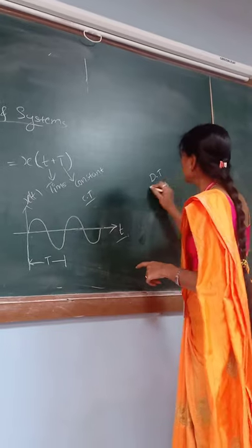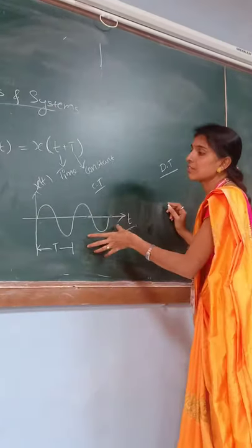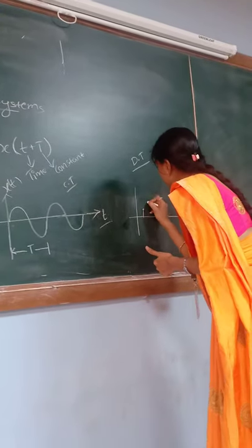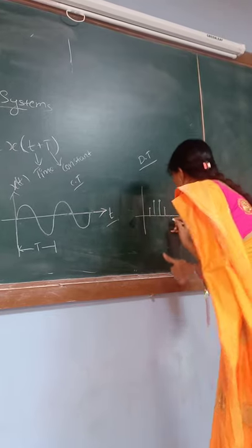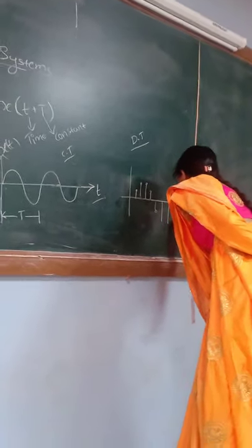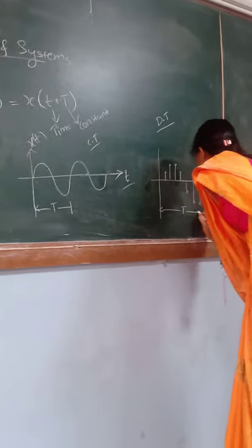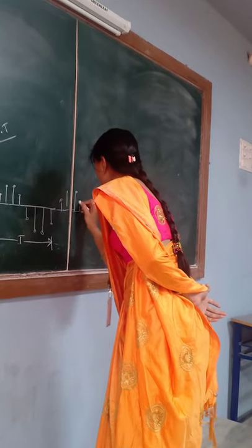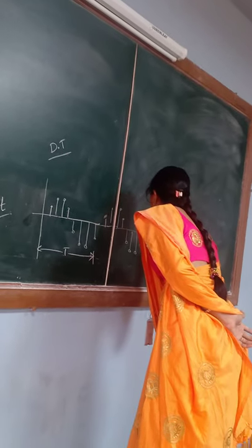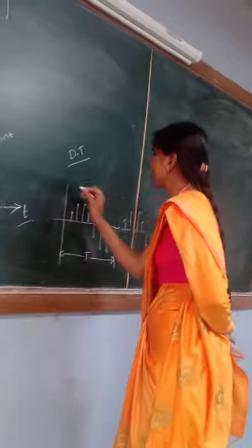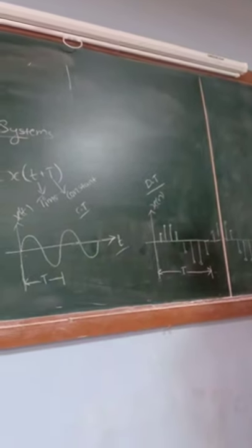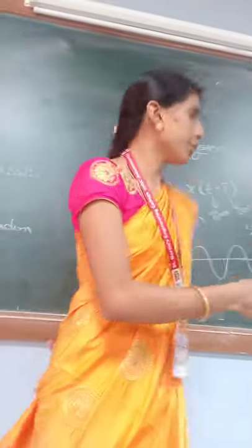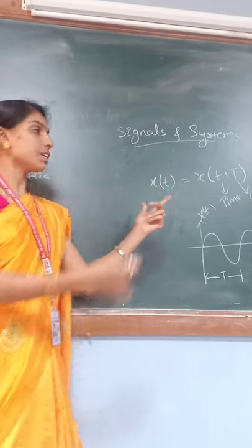We can also represent the periodic signal in the discrete time signal. In the discrete time signal, the signal will be repeated at every time interval with discrete time signals. This signal will be represented by the letter N, where N is an integer. It will be X of N, where X is the dependent variable and N is the independent variable. Periodic signal means it repeats the time interval every instant of time T.